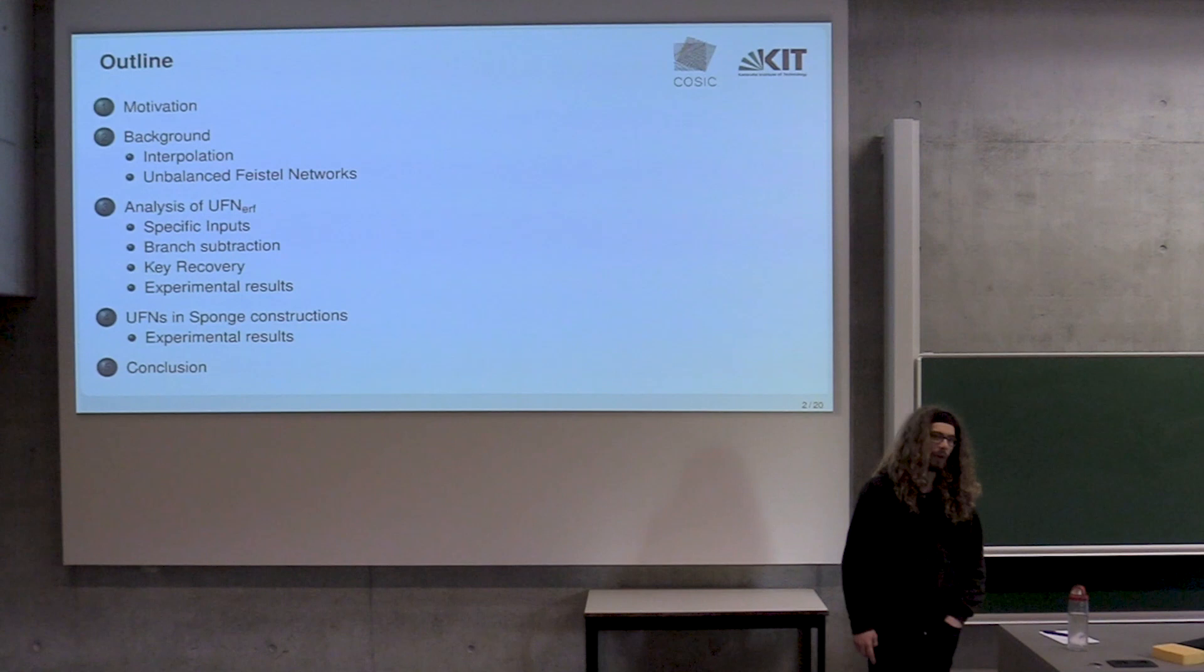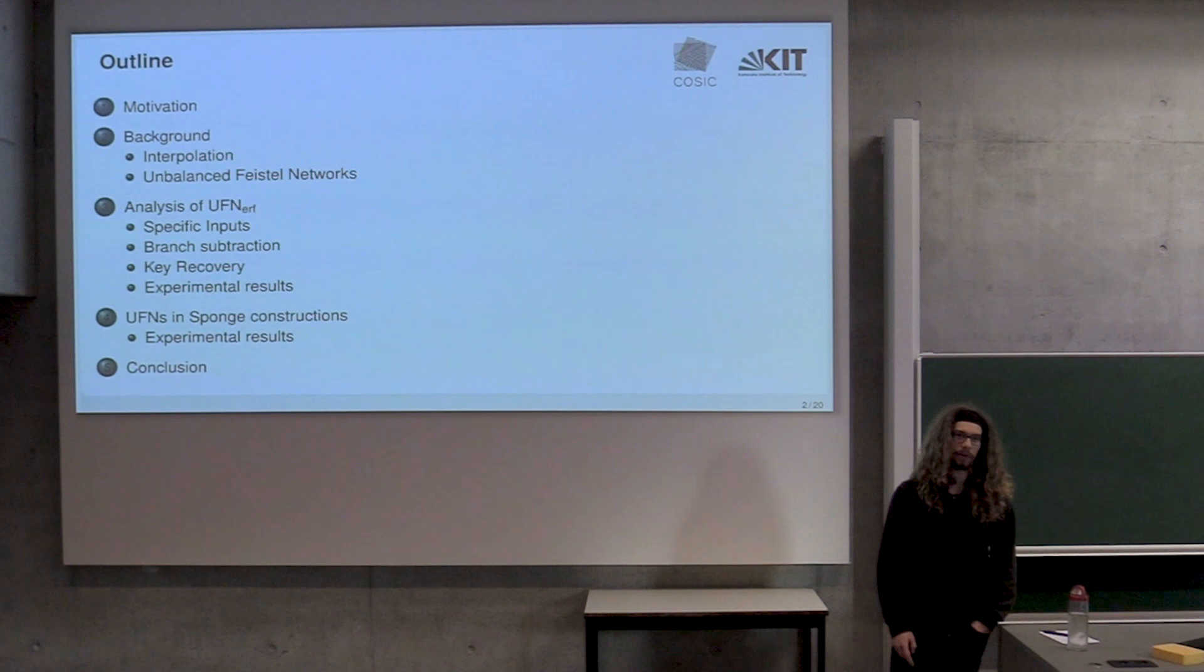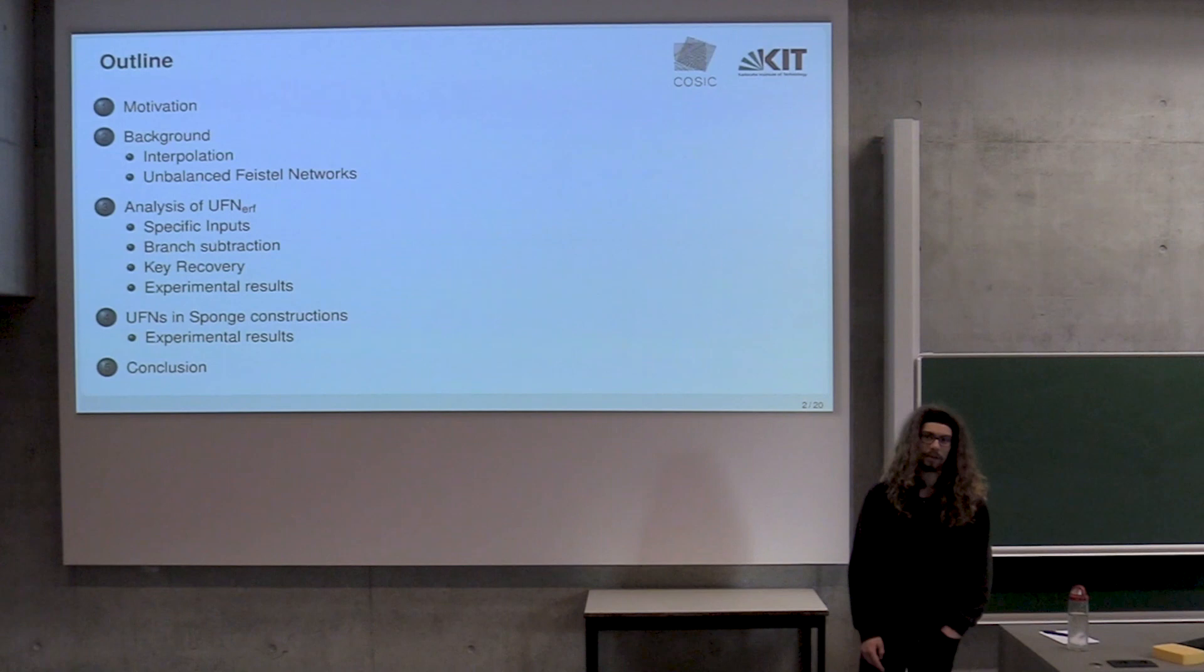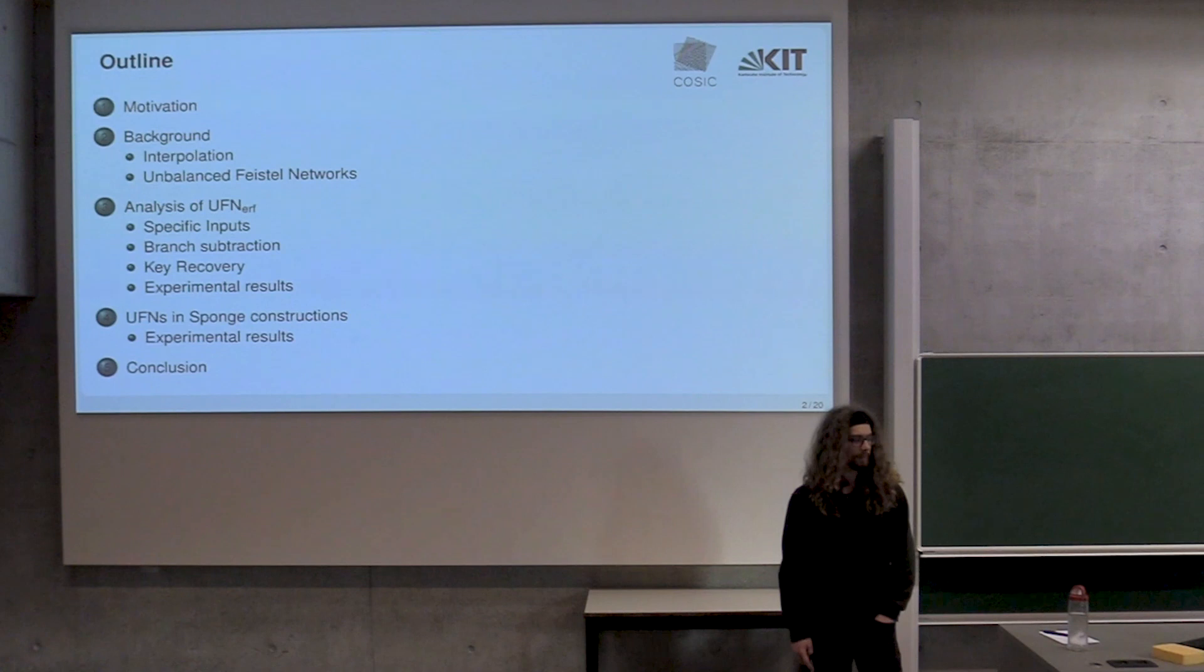We're going to explore it gradually in the next few minutes. Here's the outline of this talk. First, I'm going to give a bit of motivation, then some background about interpolating block ciphers and unbalanced Feistel networks. Then we'll dive into the specific analysis that we did, apply that to sponge constructions, and then a short conclusion.